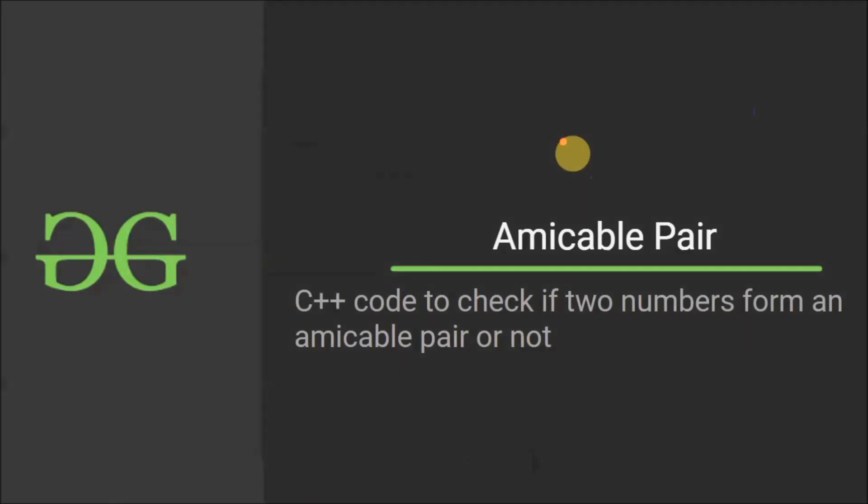Hello everyone, welcome to GeeksforGeeks. In this video we are going to see amicable pair and the C++ code to check if two numbers form an amicable pair or not.